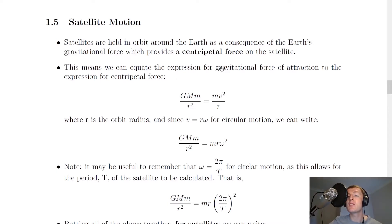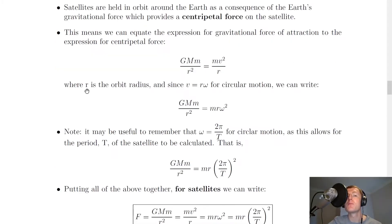This means we can equate the expression for gravitational force of attraction to the expression for centripetal force. We have GMm/r², Newton's law of universal gravitation, equals mv²/r, where r is the orbit radius—how far away the satellite is from the center of the planet.